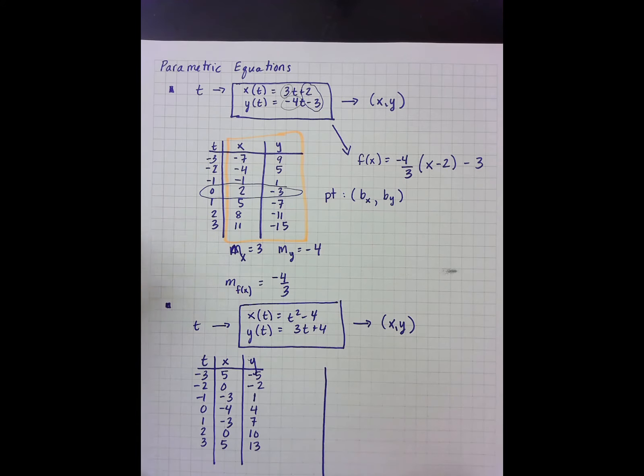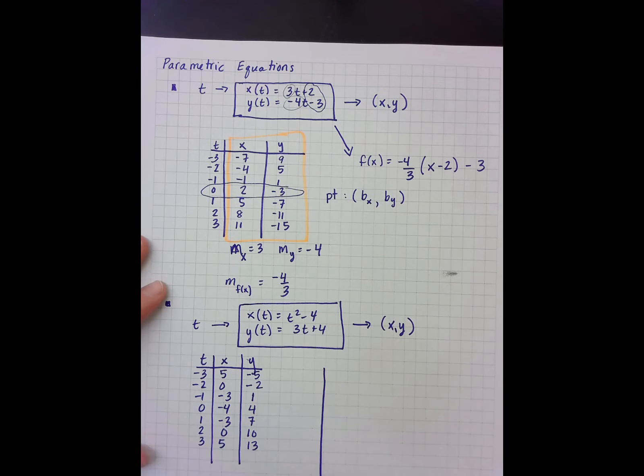And I notice with this graph that my x's kind of start repeating themselves, which makes sense in terms of this is a parabola. And so I'm going to go out to 1, 2, 3, 4, 5, 1, 2, 3, 4.